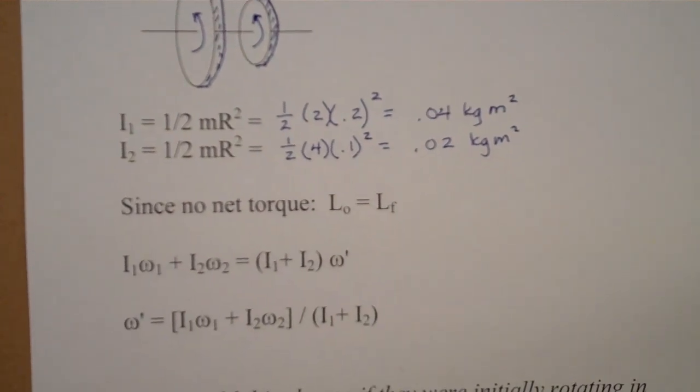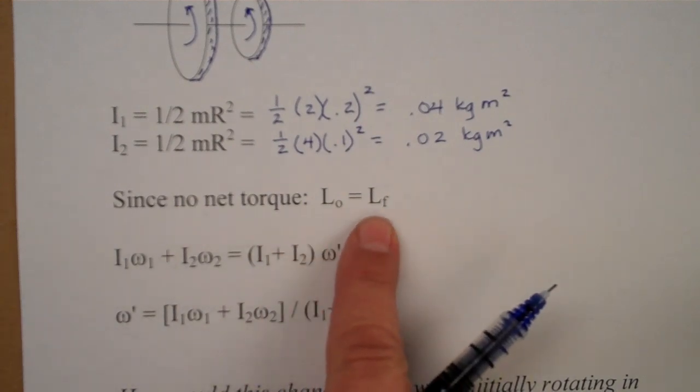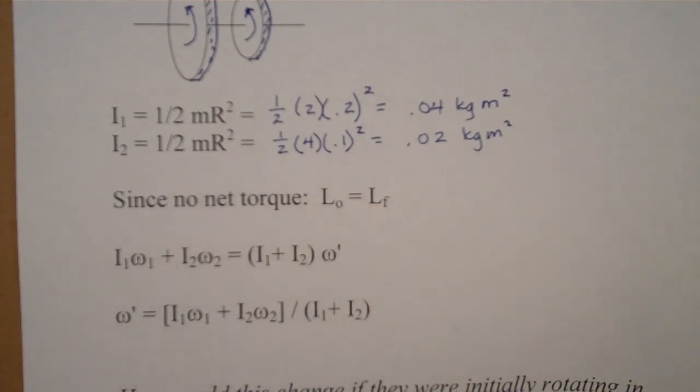Since there's no outside unbalanced forces acting on this, no torque, our closed system of two masses at the beginning is still our closed system of two masses at the end. We know that our momentum is conserved, and in this case angular momentum, just like our previous collisions.